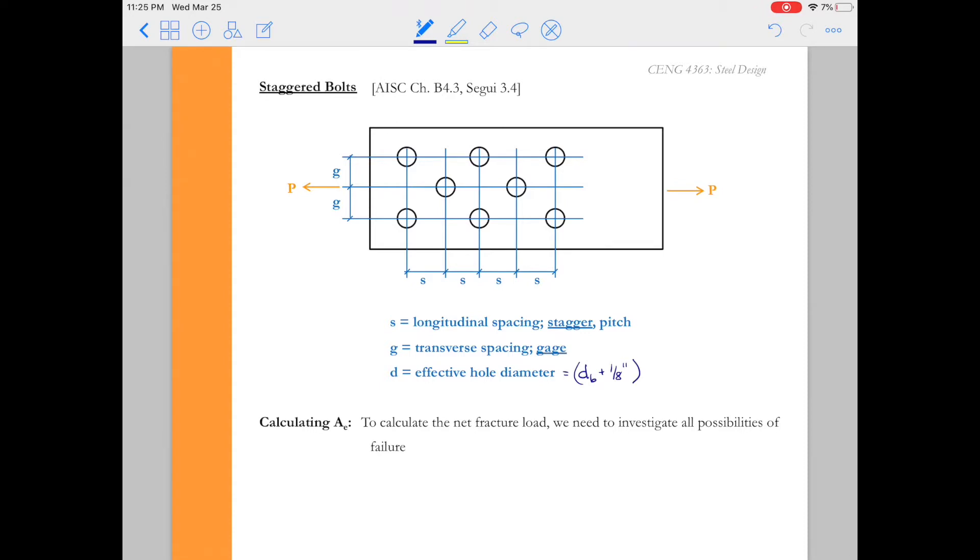To determine the fracture strength of this connection we're going to need to come up with where we expect it to fail and what path we expect it to fail on. And so for staggered connections we're going to consider a bunch of different fracture paths. Now students always ask me how many fracture paths do I have to come up with? Well you have to come up with as many as you need to to identify the one that has the lowest capacity. So let's try drawing the first one. This is just like we did in example one.